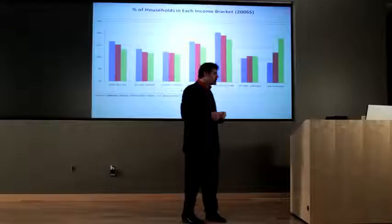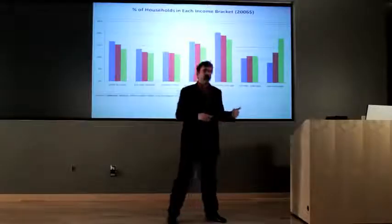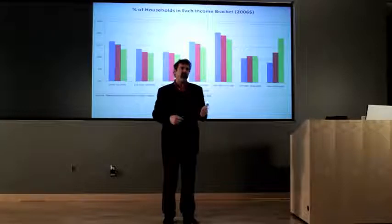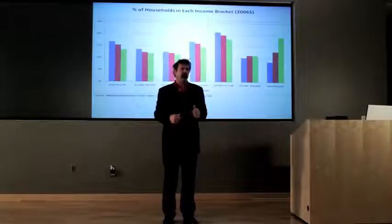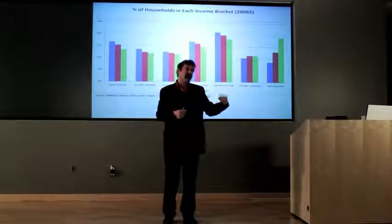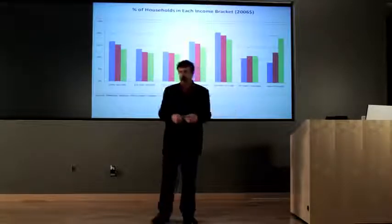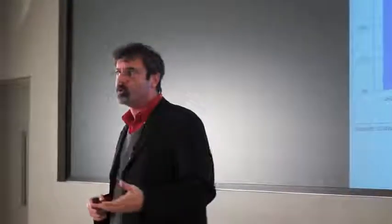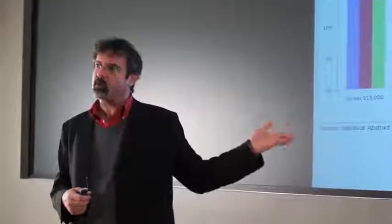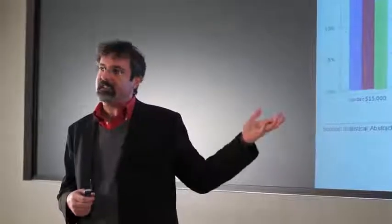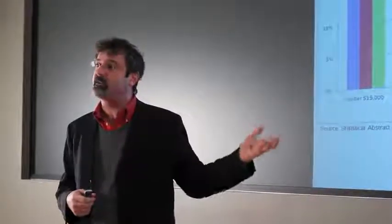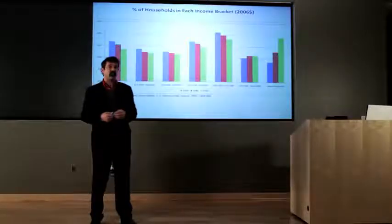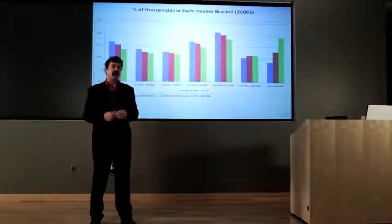So, two things to note. One, minimum wage creates unemployment amongst those who are less skilled — precisely the people it's looking to help. Two, this picture calls into question the need for it in the first place. Because, in fact, the rich are getting richer, but the poor are getting richer also.